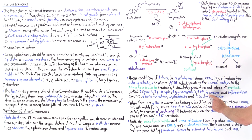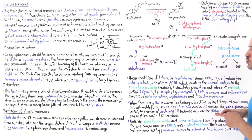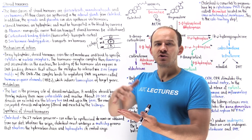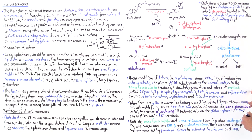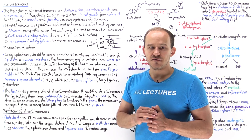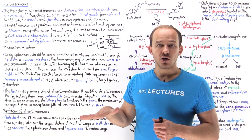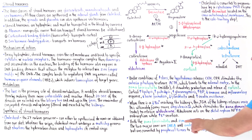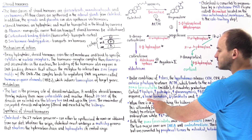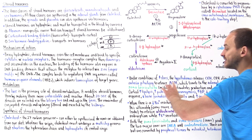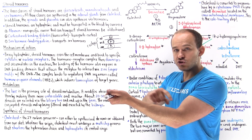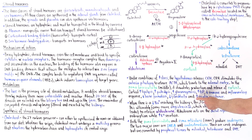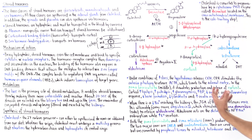Cortisol decreases immune activity and the inflammatory process. It decreases the ability of neutrophils to bind endothelium, which can increase neutrophils in the bloodstream causing neutrophilia. It decreases the production of other white blood cells and decreases the activity of phospholipase A2, reducing production of leukotrienes and prostaglandins. Cortisol also decreases osteoblast activity causing osteoporosis, decreases fibroblast activity in the skin causing skin striations, and increases insulin resistance.